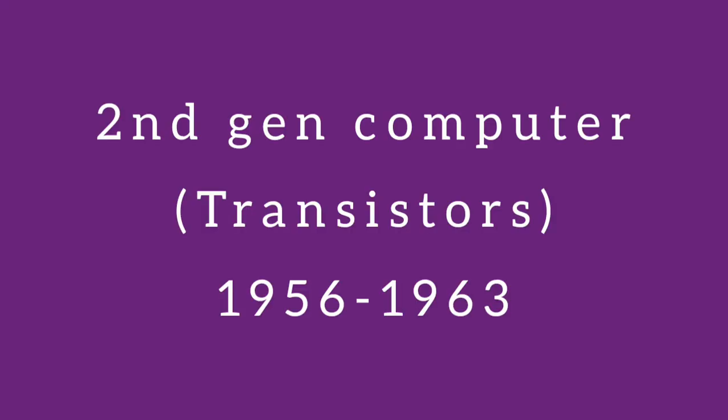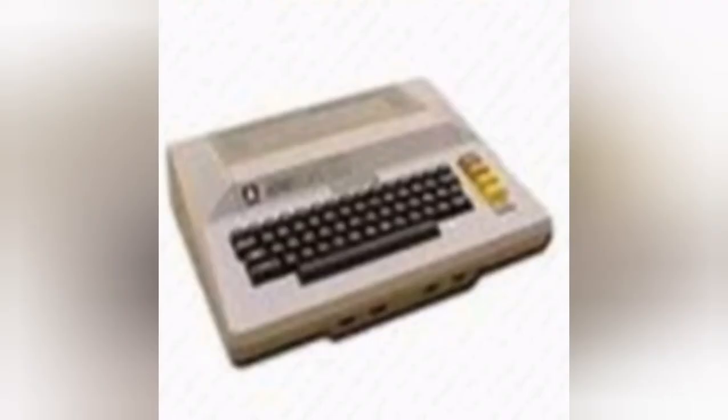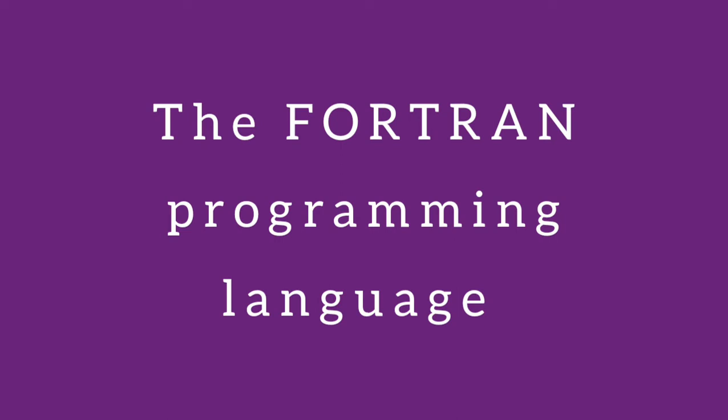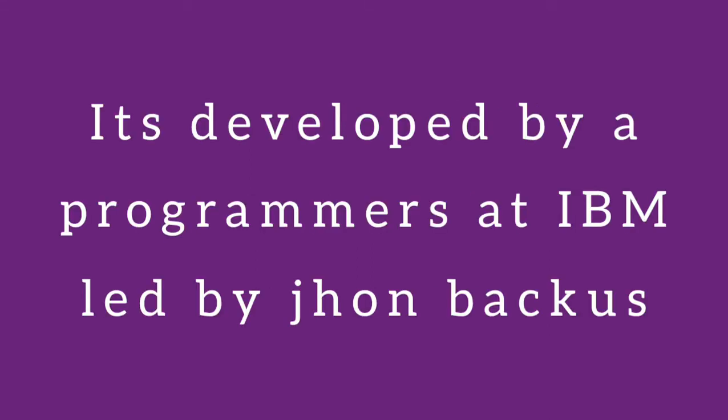The second generation introduced the transistor, which reduced computer size from room-sized to compact. We moved from machine-level to higher-level programming. In 1954, FORTRAN — F-O-R-T-R-A-N — was developed as a programming language by a team of IBM programmers led by John Backus. Power consumption was also changed significantly.